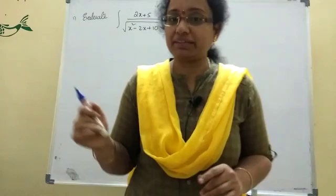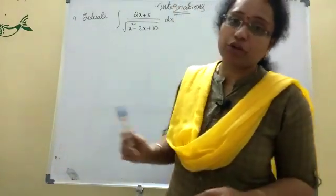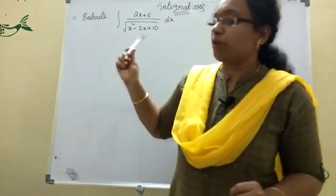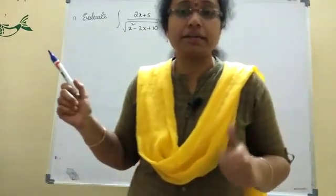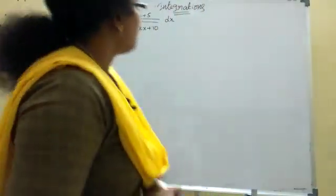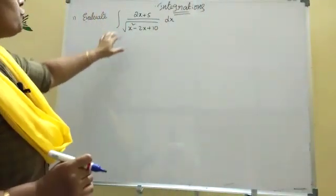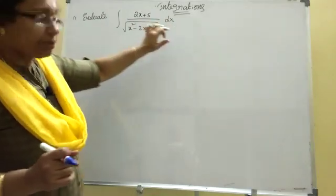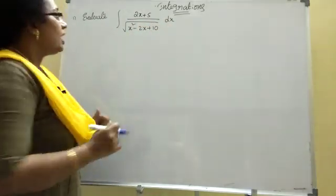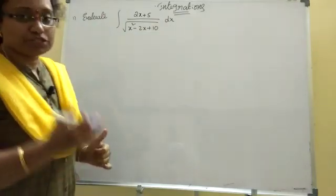Px plus q divided by x square plus bx plus c - this model is not explained to me. I will explain that formula, and I know the maximum problems with AP and Telangana. Maximum scope here, today I am explaining. Okay, come to the point here. Evaluate integration of 2x plus 5 divided by root of x square minus 2x plus 10 dx. I will explain what is the formula here.